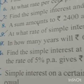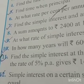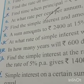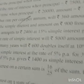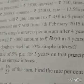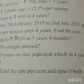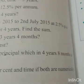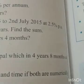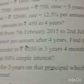Exercise time, question number seven onwards. Today I shall explain: find the simple interest and amount on rupees 900 from 7th February 2015 to 2nd July 2015 at 2.5% per annum.